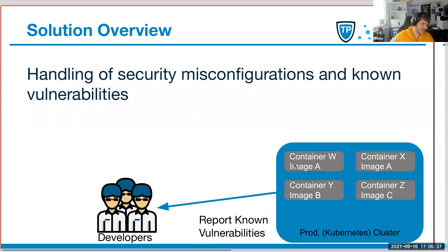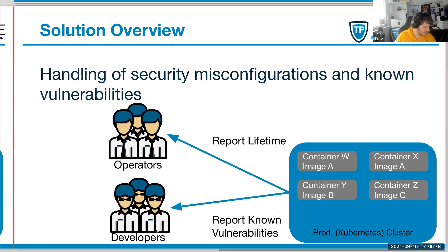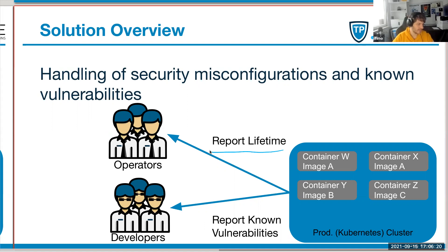For those who weren't there last time, let me give you a short introduction. What we would like to reach is that the images which we are having in production get scanned for things like security misconfigurations or known vulnerabilities. Obviously, when we talk about vulnerabilities, we need to inform the people who are actually using the images. In addition to informing developers about misconfigurations, it's also useful for operators - for example, reporting the lifetime of an image so they can get informed after N days to react.